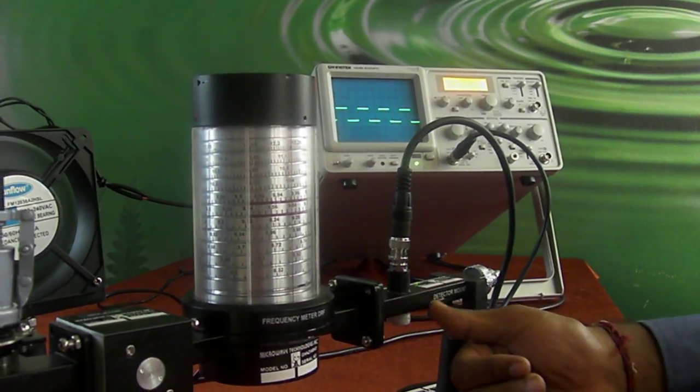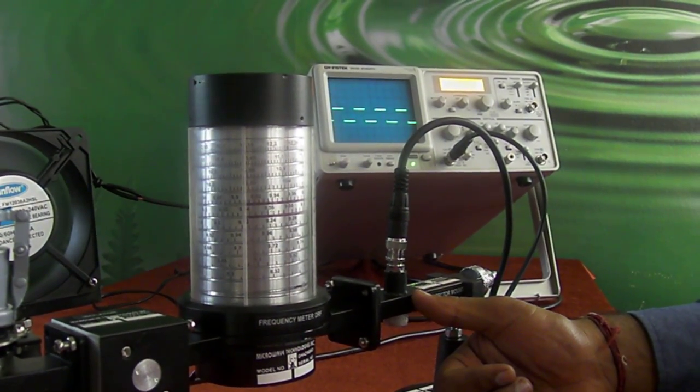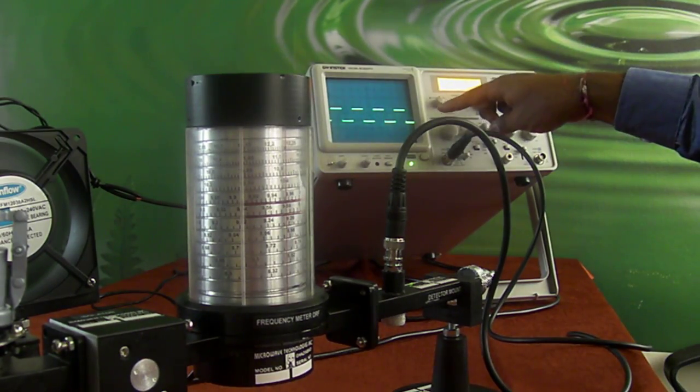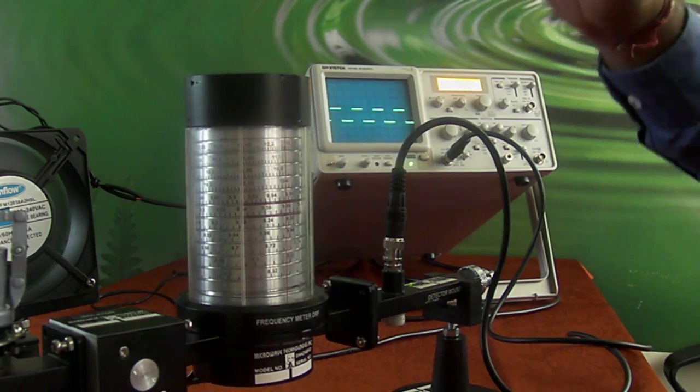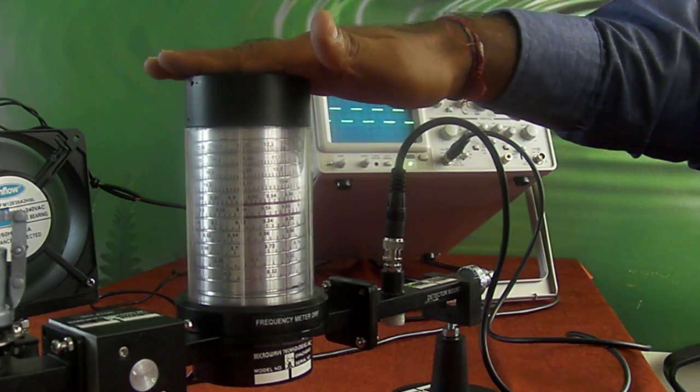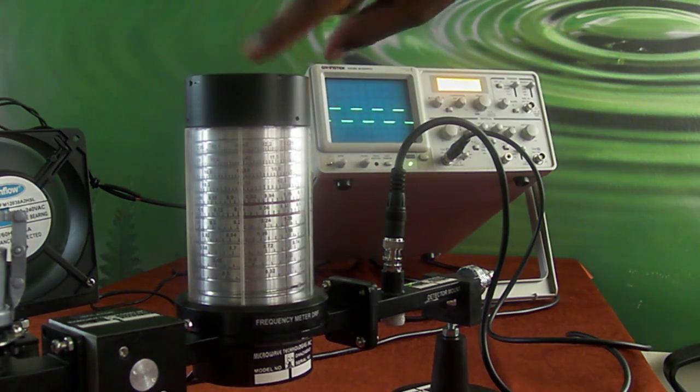After the frequency meter, we have used the detector mount. The detector mount is detecting the waveform which we are getting on the CRO. Now, how to calculate or get the frequency by using this analog frequency meter? This frequency meter gives us the reading in gigahertz range only.